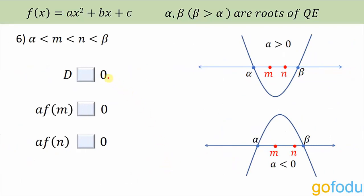Next question: there are two points m and n both lying between the roots alpha and beta. D is greater than zero. Since a and f(m) are of opposite sign, a·f(m) < 0. Similarly, a and f(n) are of opposite sign, so a·f(n) < 0.